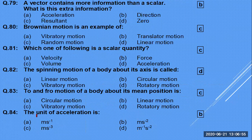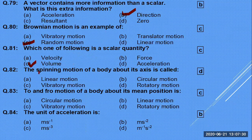A vector contains more information than a scalar. The extra information is direction. Both have units and magnitude, but the only difference is that vectors have direction. Brownian motion — the irregular zigzag motion of particles — is an example of random motion.